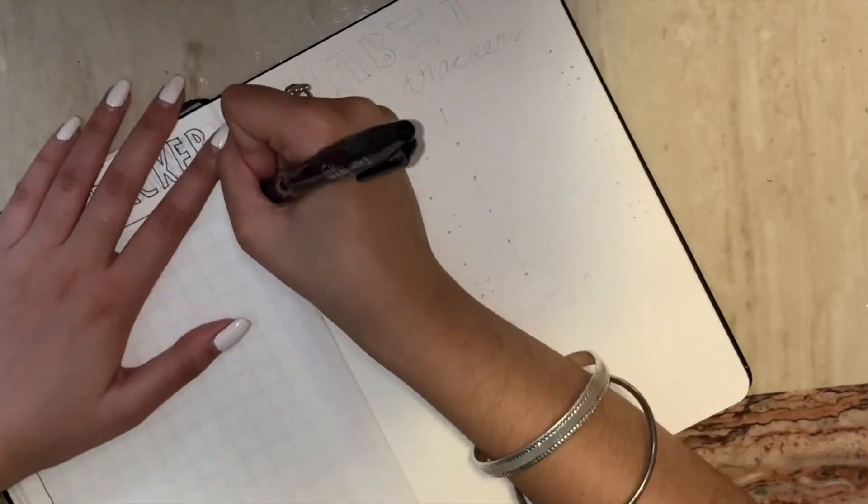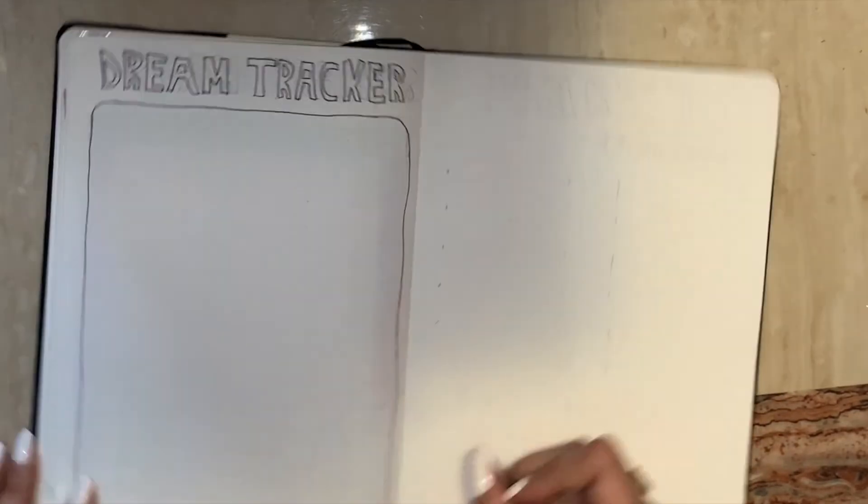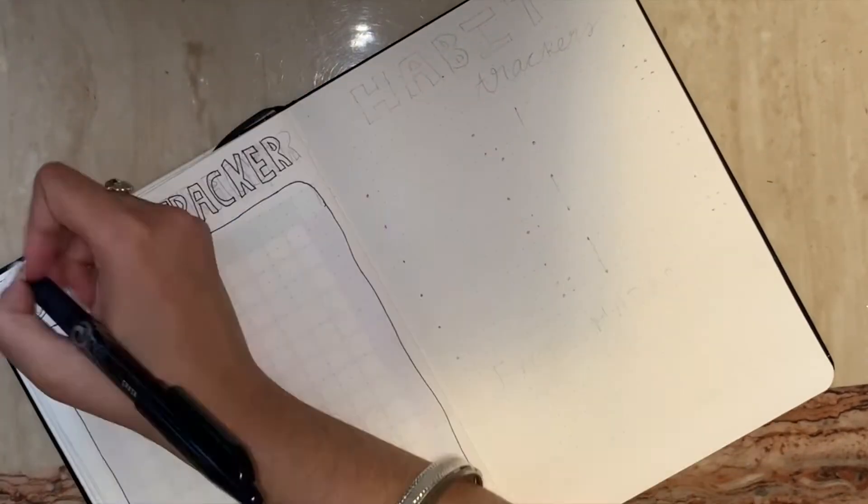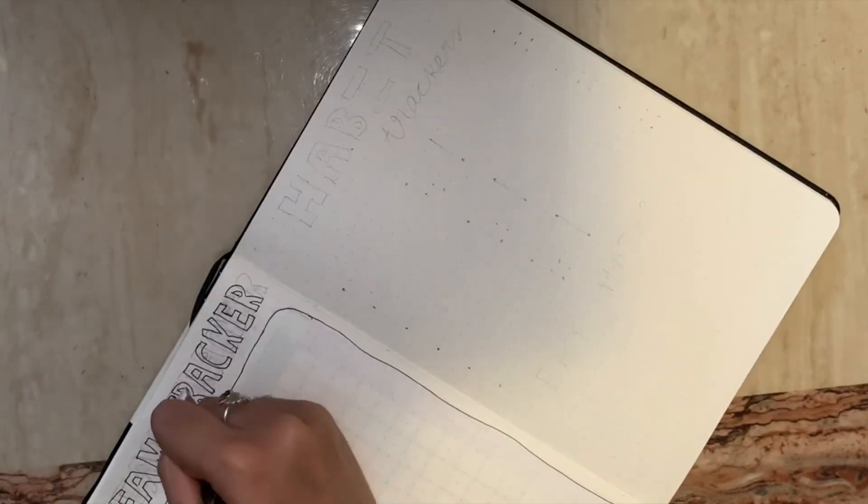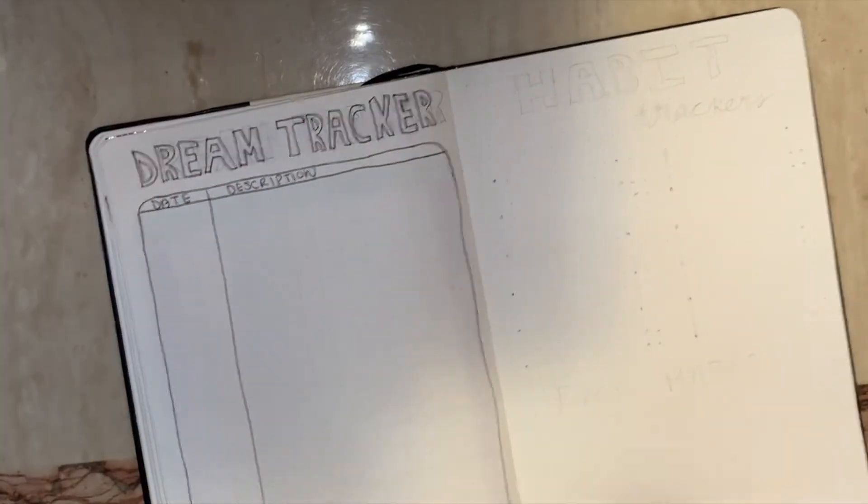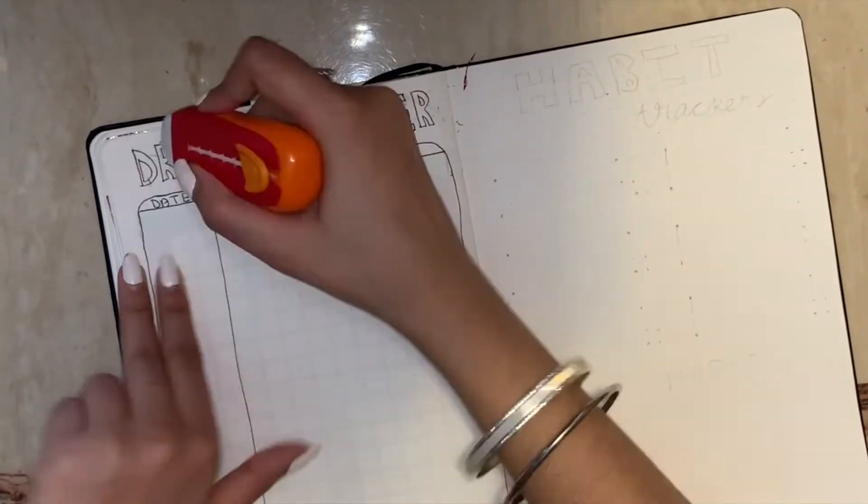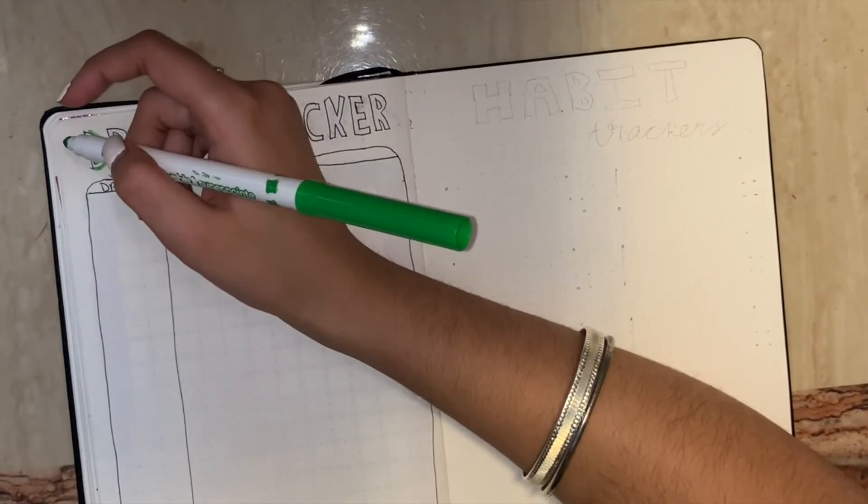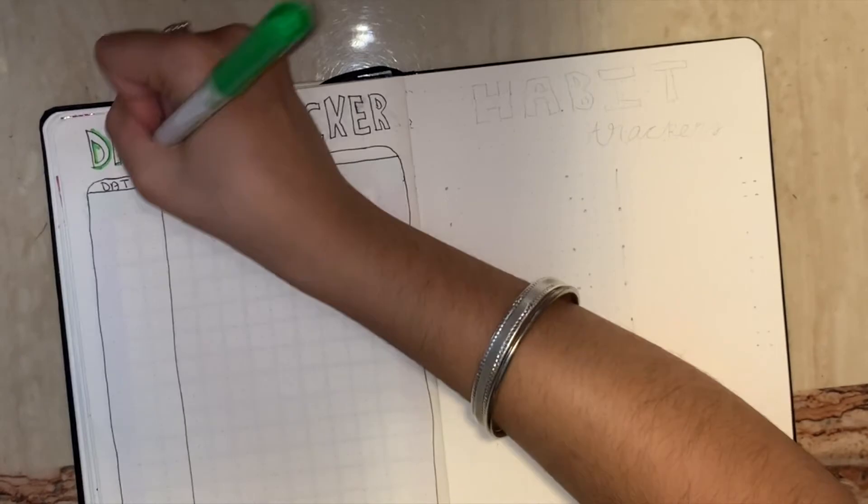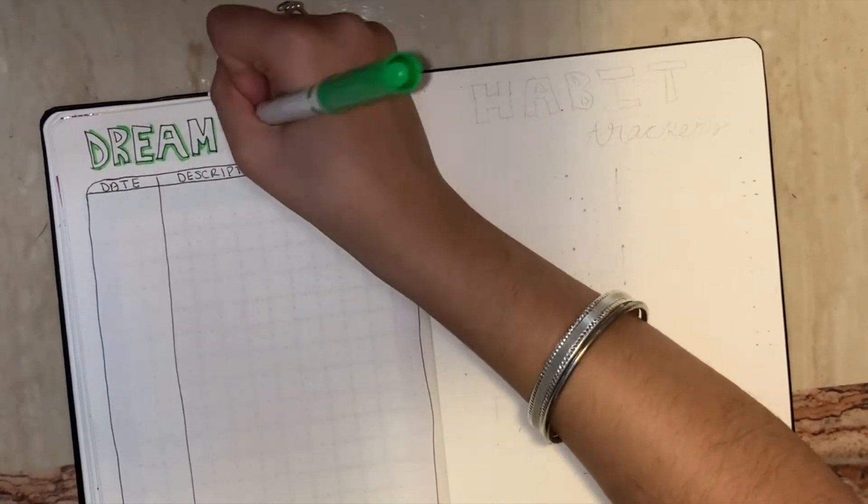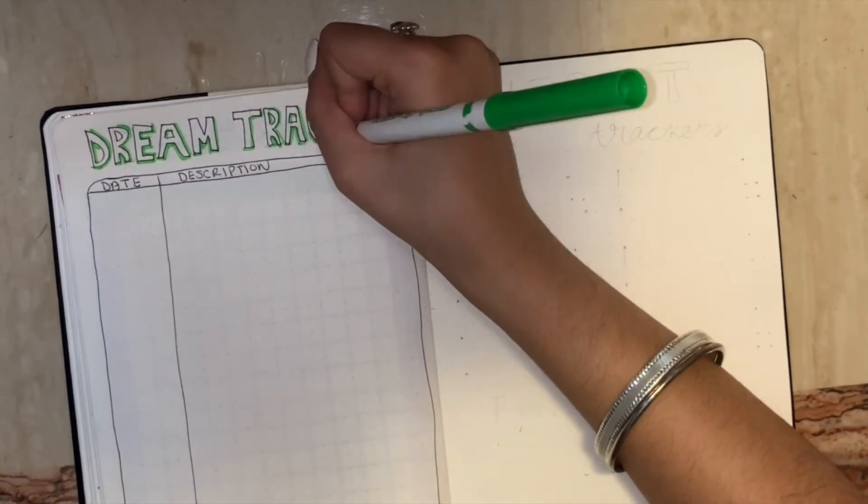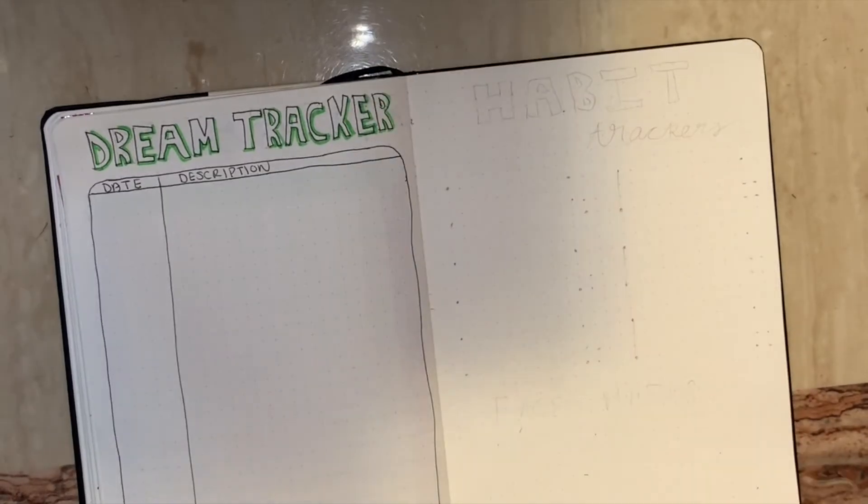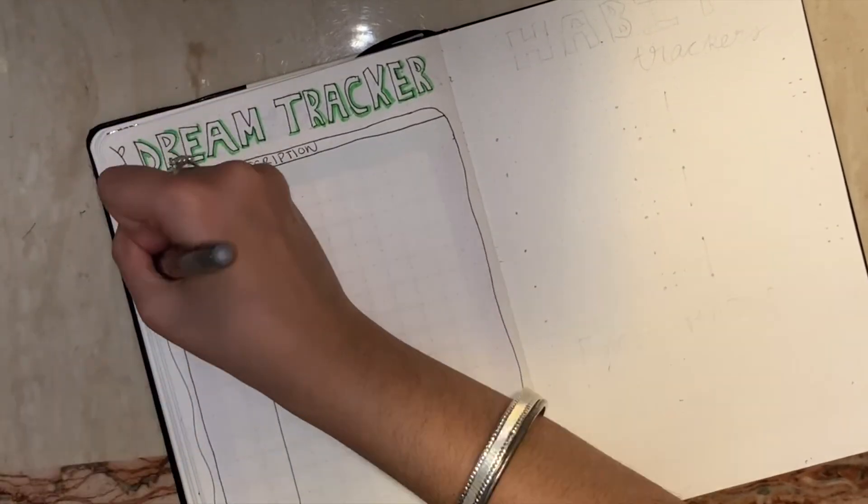Which is just going to say date and details of the dream, or it says description actually. Now I'm just erasing the pencil lines and going in with green to add a drop shadow to the letters. And now I'm just adding a line going down on the left side.